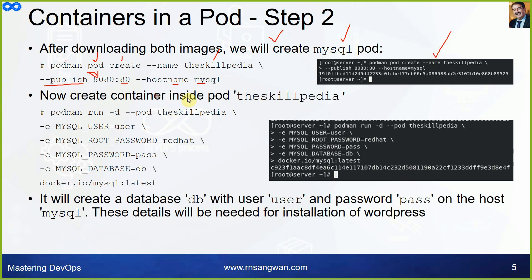Now create a container inside the pod: `podman run -d --pod the-skillpedia` with the required environment variables. The `-d` flag means detached mode. Remember, `ENV` was an instruction in the Dockerfile where you specify environment variables to be used inside the container. We are passing those environment variables because the MySQL image accepts them.